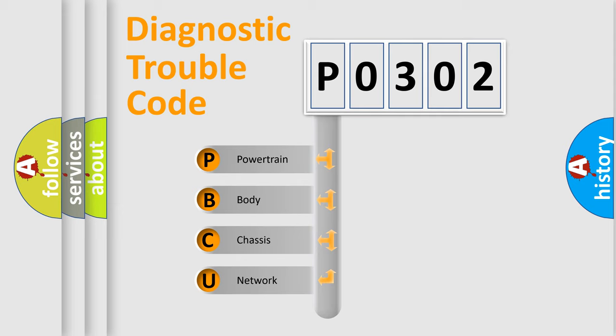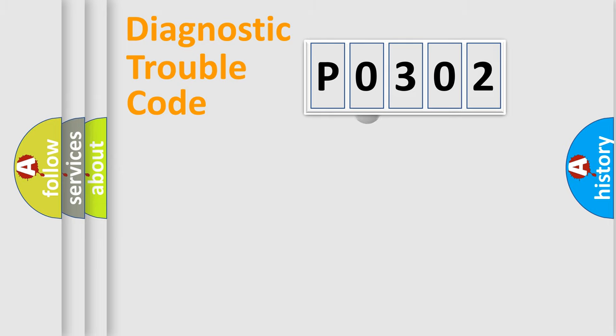We divide the electric system of automobile into four basic units: Powertrain, Body, Chassis, and Network. This distribution is defined in the first character code.